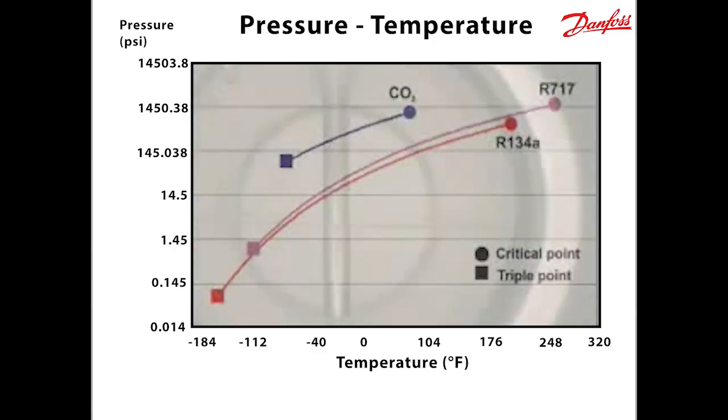Compared to commonly used refrigerants, R134A and R717, CO2 has some unique characteristics. It operates at a much higher pressure, but across a narrower temperature range than R134A and R717. The pressure at the triple point is high, and the temperature at the critical point is low.